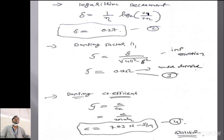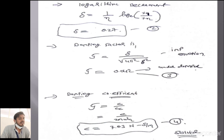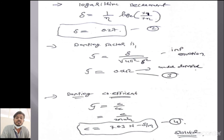The second thing we have to find is the logarithmic decrement. The equation is: δ = (1/n) × ln(x1/xn). By putting the given values, we can directly find δ = 0.27. It has no unit — logarithmic decrement is a unitless term.